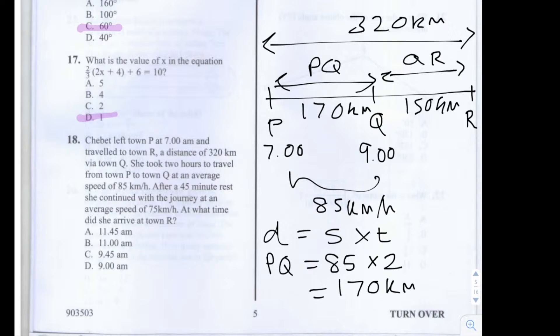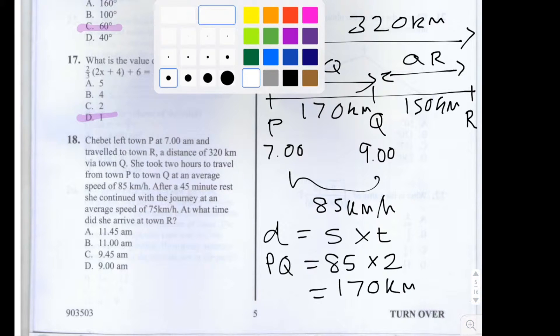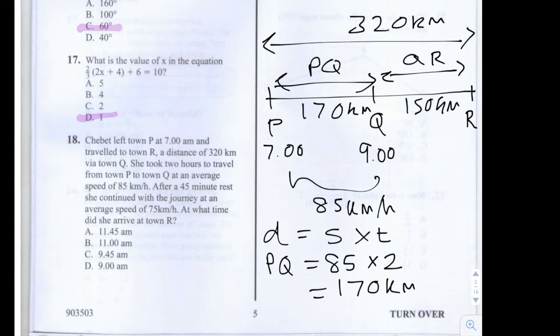We can now start to work out what time she arrived at R. But first, we need to factor in that she waited 45 minutes at Q before travelling to R. We know she set off on her journey from Q to R at 9.45am. And we know that the average speed here that she took from travelling from Q to R was 75km per hour.